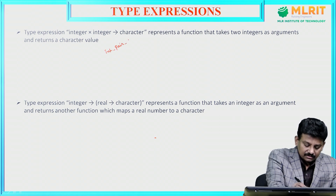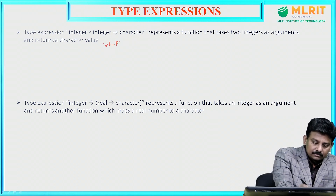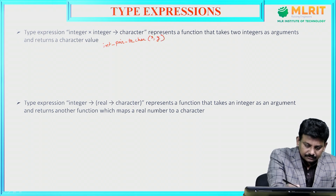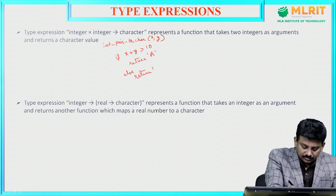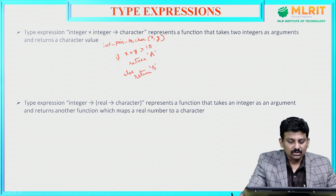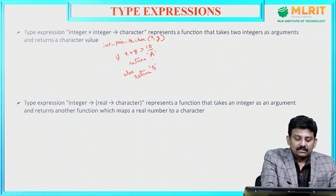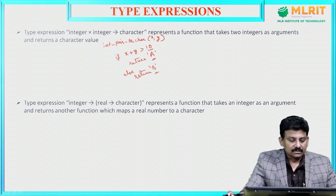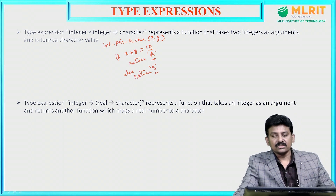The type expression integer × integer → character represents a function that takes two integers as arguments and returns a character value. For example, a function int_to_char(x, y) where x and y are integers: if x + y > 10, return 'A', else return 'B'. Here, A and B are characters, so integer × integer → character is a type expression representing that function.